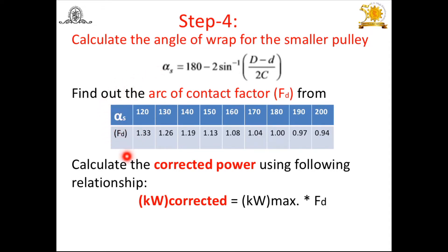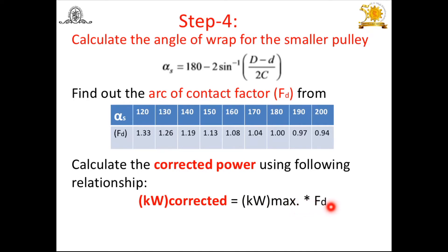After calculating the arc of contact factor EFD from the catalog table, calculate the corrected power: corrected power (kW) = K_max × EFD.